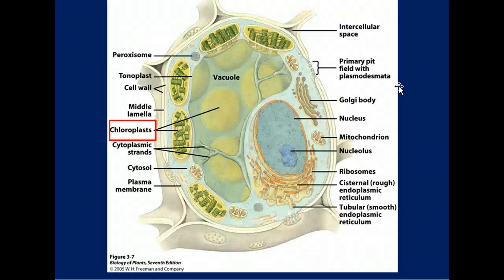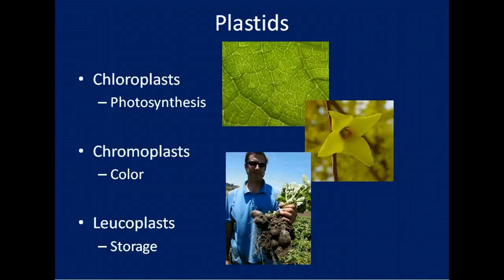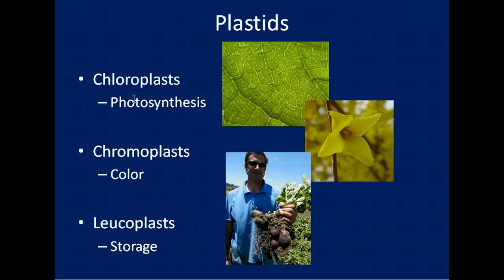Within the protoplast, to the interior of the plasma membrane, are organelles. The first type of organelle I'd like to talk about are plastids. Here you can see some chloroplasts and there's a plastid down here. Most people are familiar with chloroplasts, which is only one of the three types of plastids found in plant cells. Chloroplasts are the first type of plastid, and it's within these chloroplasts that you find chlorophyll, which gives plants their green color.